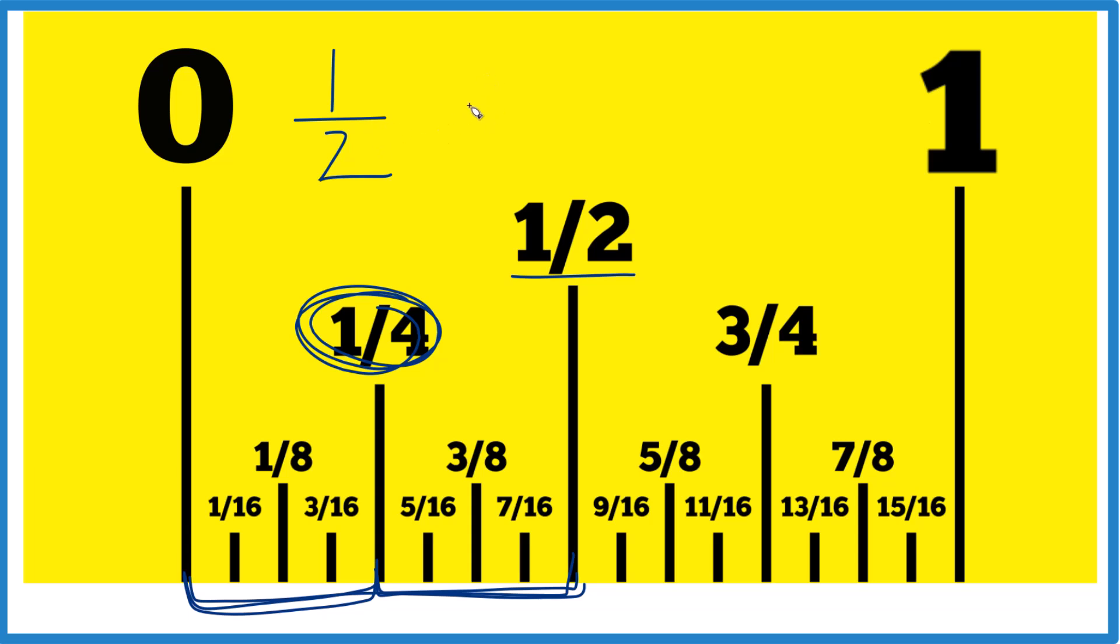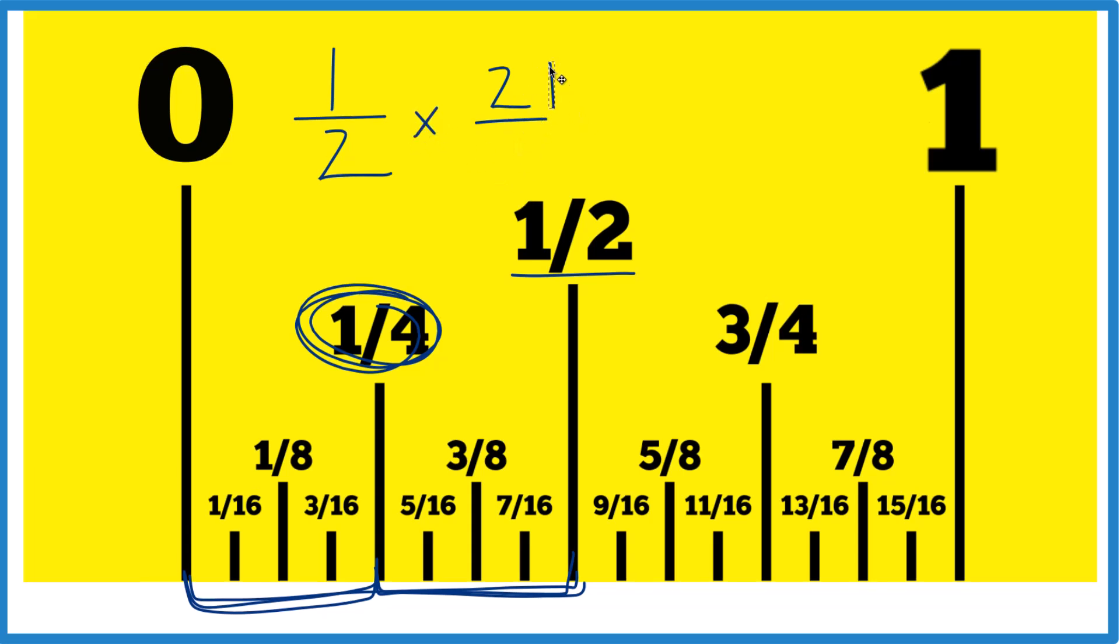So instead of dividing by two, we're going to take the two, call it two over one, and then we multiply by what's called the reciprocal. So we take the one to the top, the two to the bottom here, and we end up with one half times one half.